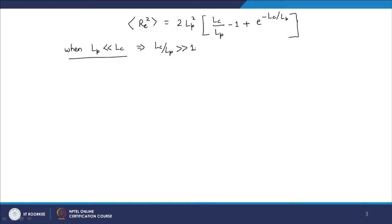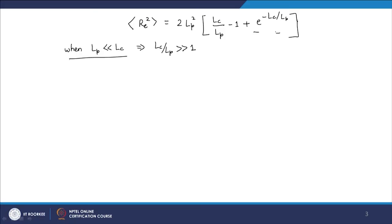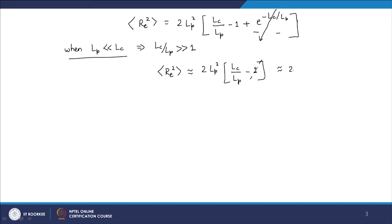In this case, since the exponent is a large negative number, the exponential term drops out. So Re² ≈ 2LP²(LC/LP − 1). Since LC/LP is much greater than 1, we can also drop the −1 term, giving Re² ≈ 2LP·LC.